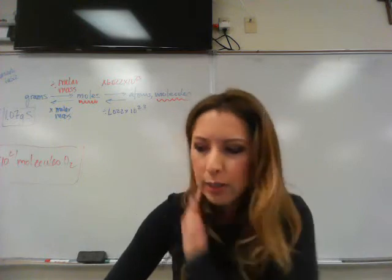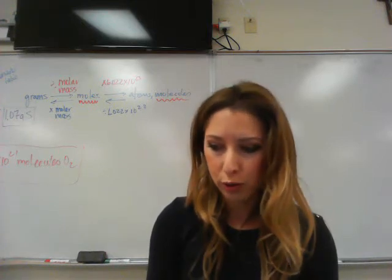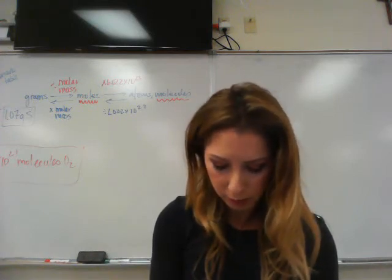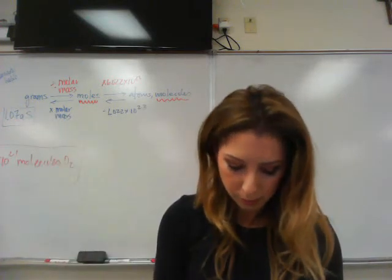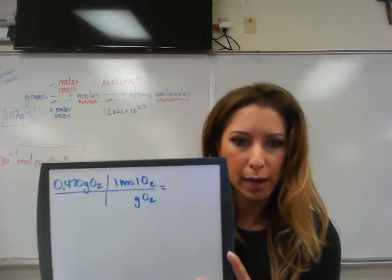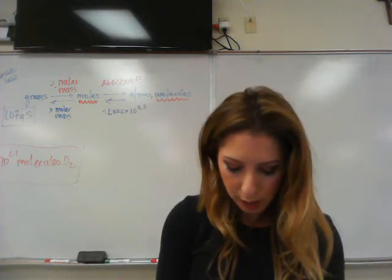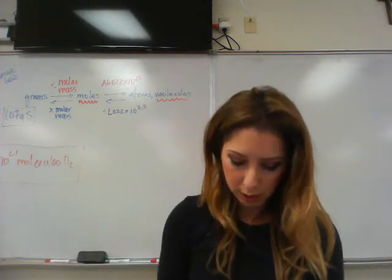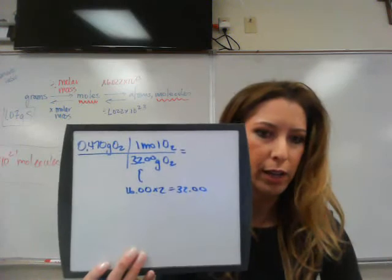How many oxygen molecules are present in 0.470 grams of oxygen? So you're starting at grams. You need to convert to moles first, and then convert moles to molecules. So 0.470 grams of oxygen goes in the upper left-hand corner. Put grams of oxygen on the diagonal, and put one mole up on top. When you convert grams to moles, you have to divide by the molar mass from the periodic table. You put the molar mass of O2 on the bottom next to grams. One oxygen on the periodic table is 16, but since you have O2, you multiply it by 2, so 32.